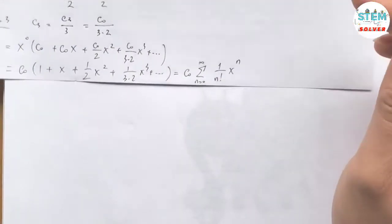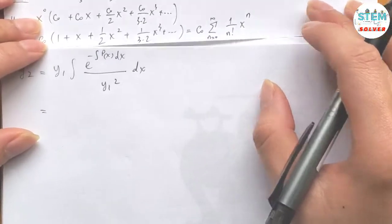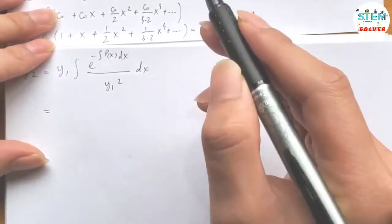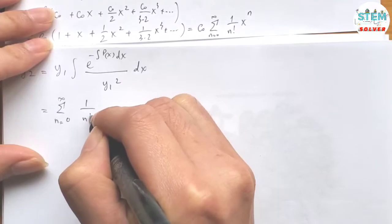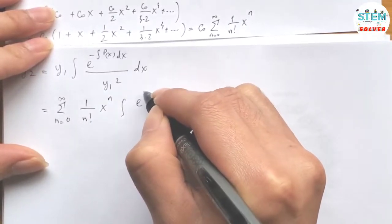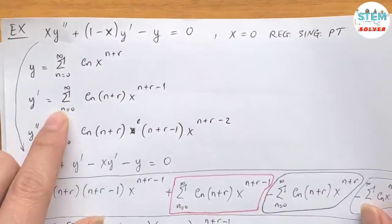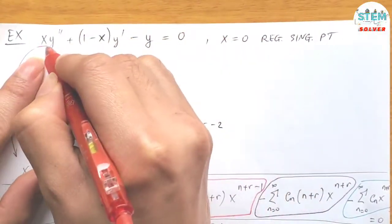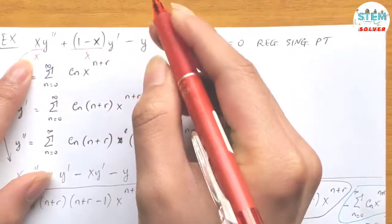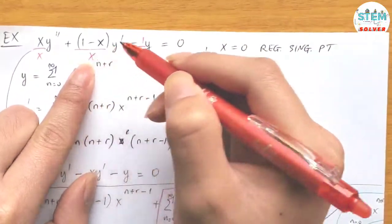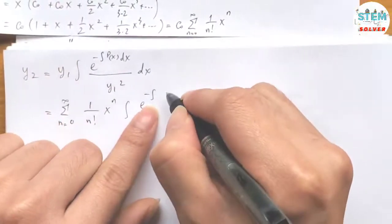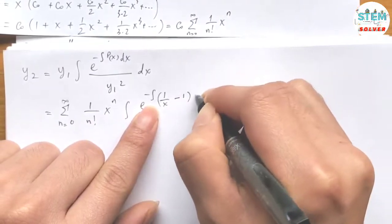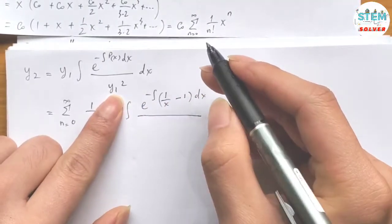So our y_1 equals e to the x (ignoring the constant). Now, what is q(x)? It is the coefficient of y prime after dividing by the leading coefficient. After dividing by the leading coefficient, we get q(x) equals 1 over x minus 1. So we have the integral of e to the negative integral of (1 over x minus 1) dx, over y_1 squared.